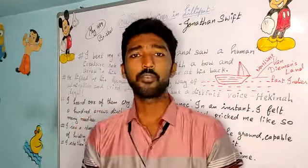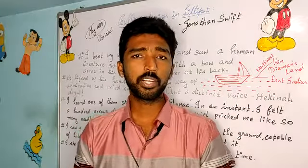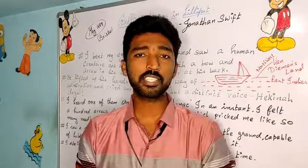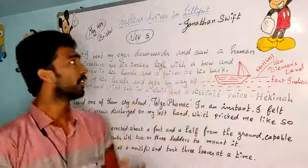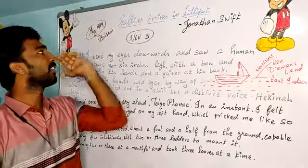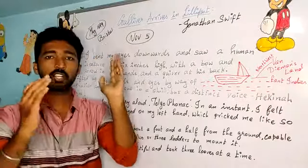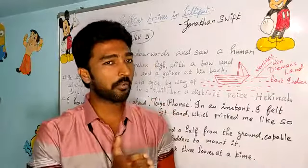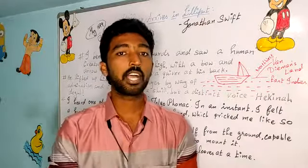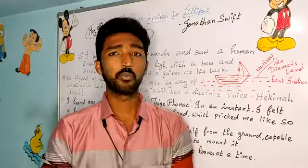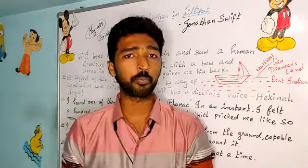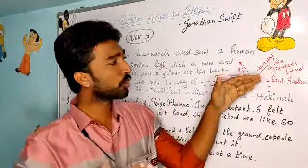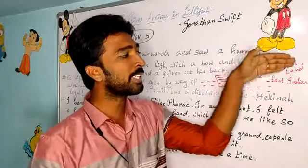In the previous part we saw Gulliver — his aim was to become a seaman. His first travel was set in May 1699 from Bristol to travel to the South Seas. On his way, he was about to travel to the East Indies, and in his passage he and his crew members were hit by a violent storm.